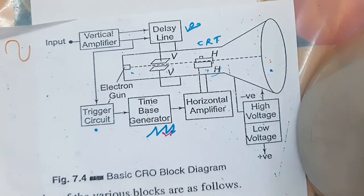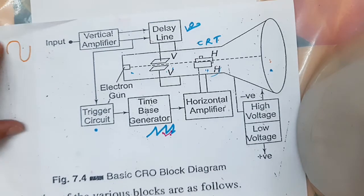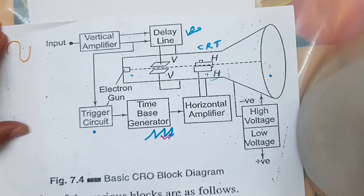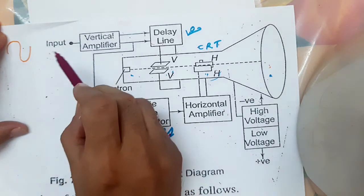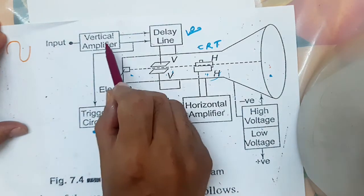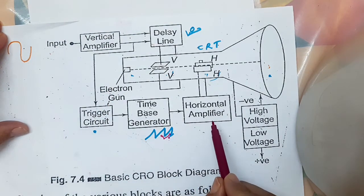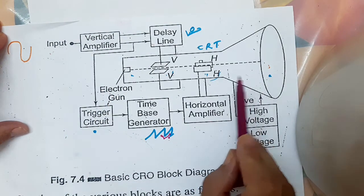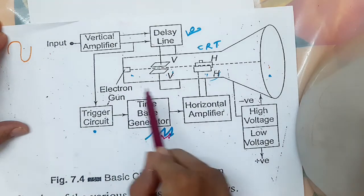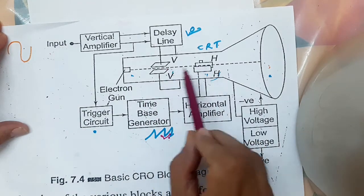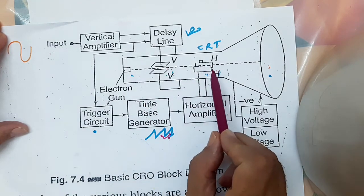Up to this 4th lecture of CRO, we already discussed about the vertical amplifier, trigger circuit, time base generator, horizontal amplifier, screen, CRT tube, two deflecting plates — vertical and horizontal.